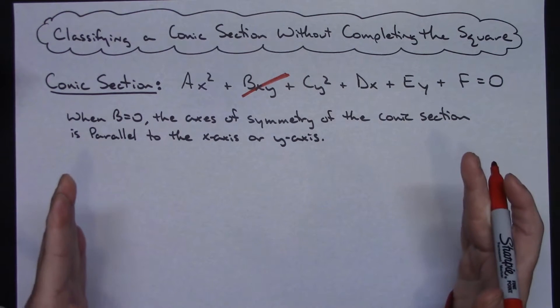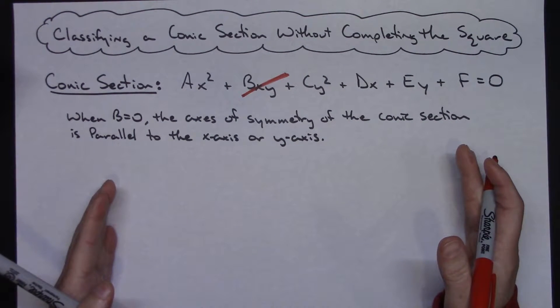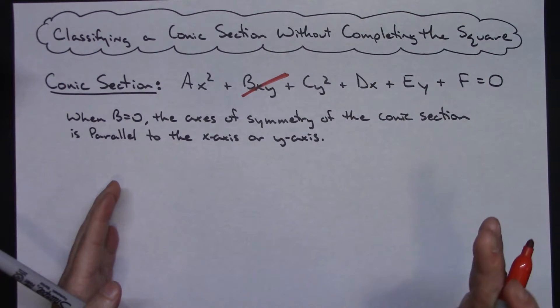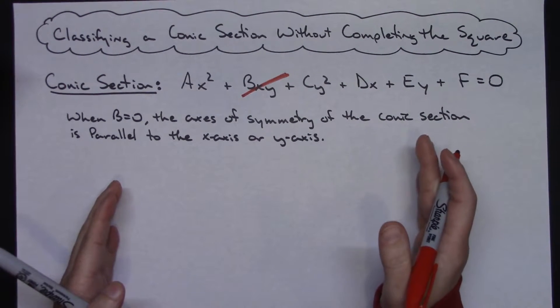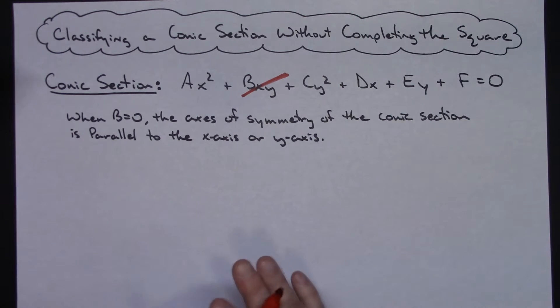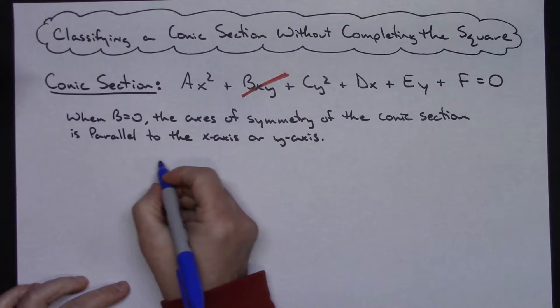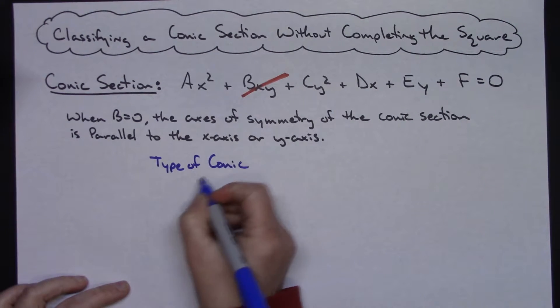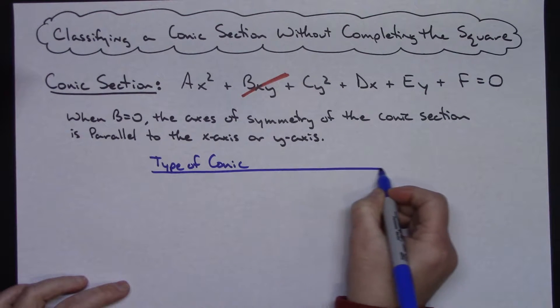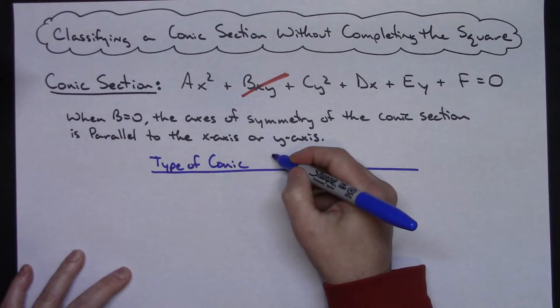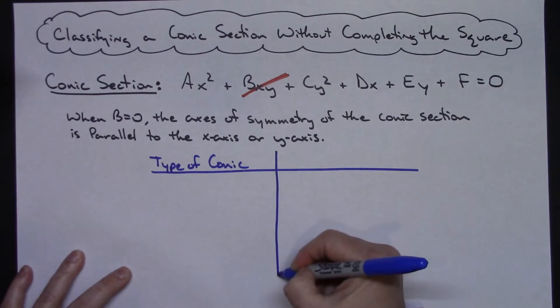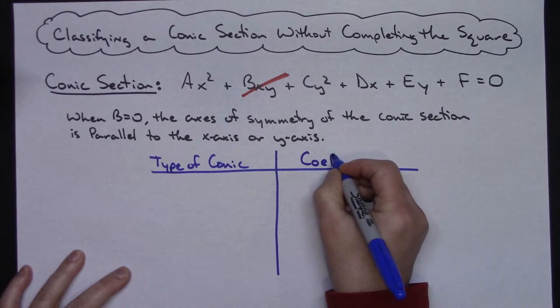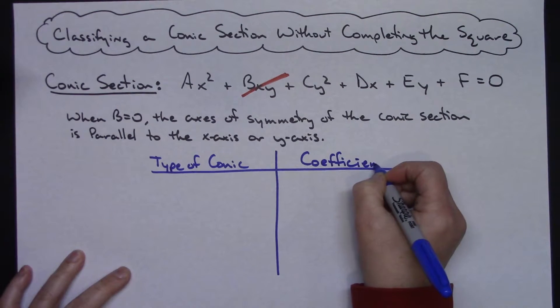So we can real quickly jot down a chart that is going to help us be able to classify just exactly what this conic section is without actually completing that square. So basically your chart can have two columns in it. We're going to put our type of conic in the left-hand side, and we're going to put our coefficients in the right-hand side, and conditions for our coefficients.